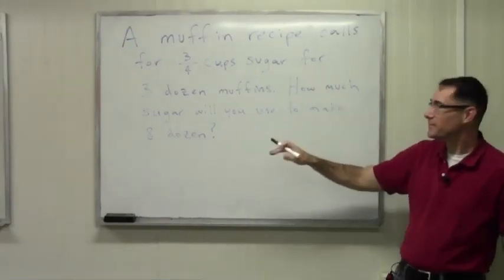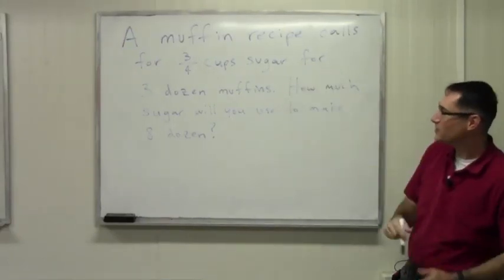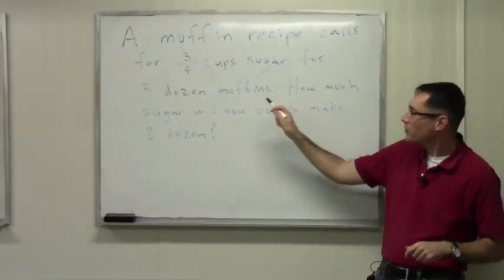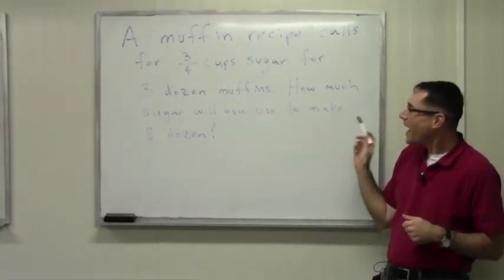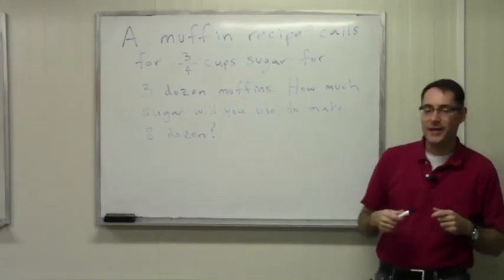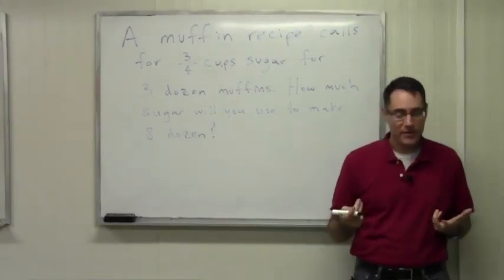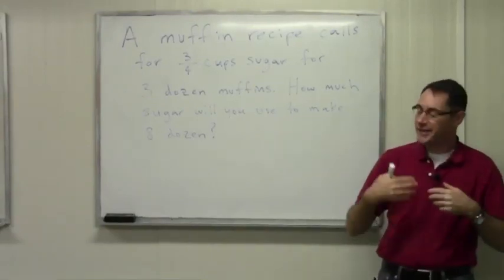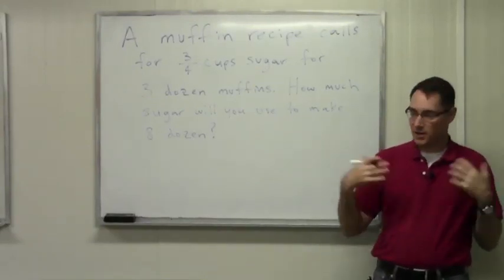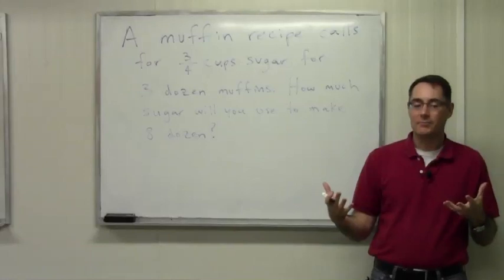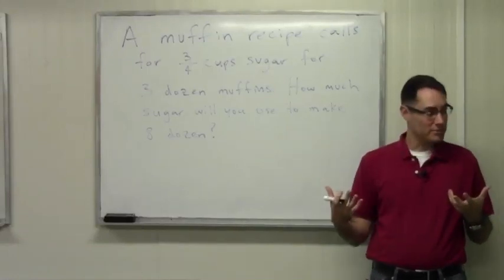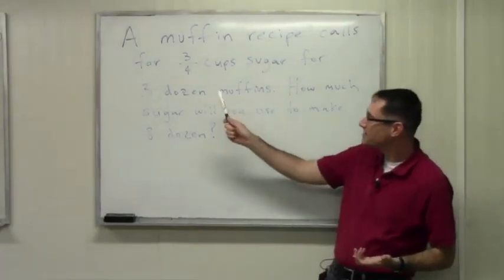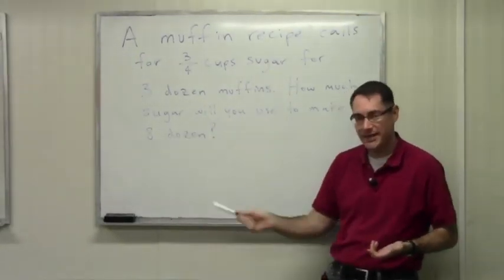Here's the question. A muffin recipe calls for three quarters of a cup of sugar for three dozen muffins. How much sugar will you use to make eight dozen muffins? It's a classic example of having a recipe that gives a certain amount of food, and you don't want to make that amount — in this case, instead of three dozen muffins, you want to make eight dozen muffins.